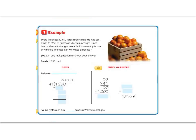Let's practice again with a second example. Each Wednesday, Mr. Yates orders fruit. He has set aside $1,250 to purchase Valencia oranges. Each box of Valencia oranges costs $41. How many boxes of Valencia oranges can Mr. Yates purchase? We can use multiplication to check our answer.